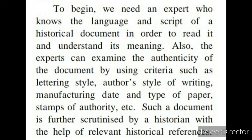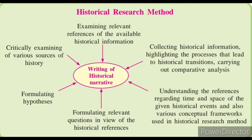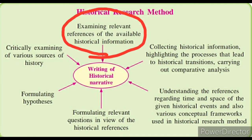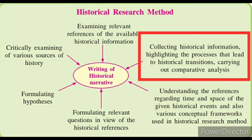There is a chart showing how historical research is done. The first point is critically examining various sources of history — where did the information come from, is it true or false? The second point is examining relevant references of the available historical information — cross-checking whether the information from any source is correct. The third point is to collect more information about that particular topic and highlight the process of transition — for example, how we moved from the Stone Age to the Medieval Age.